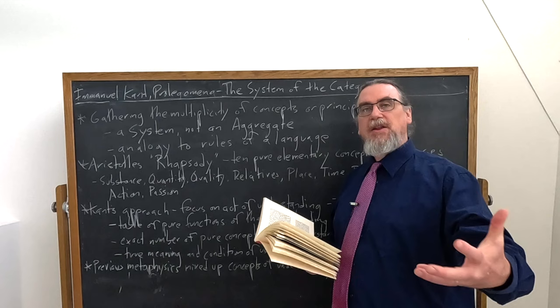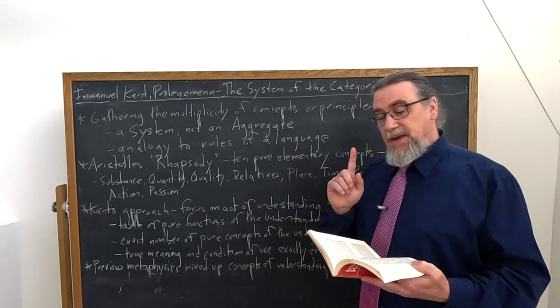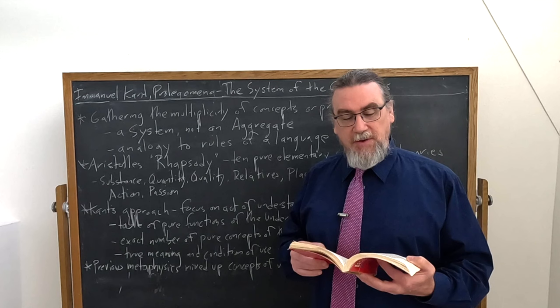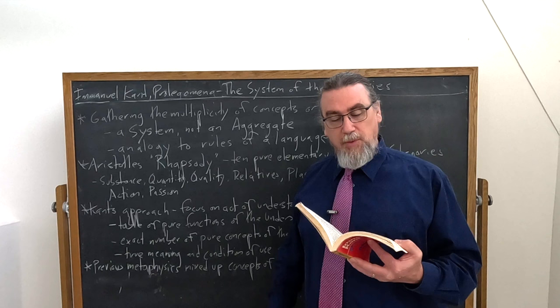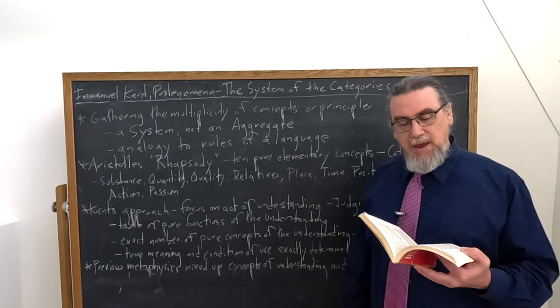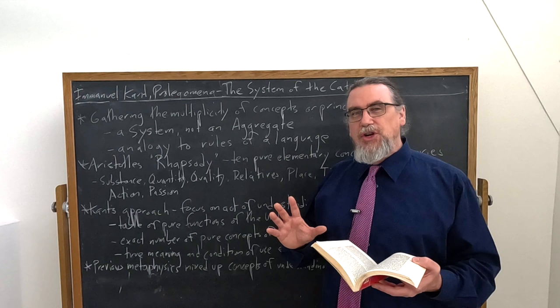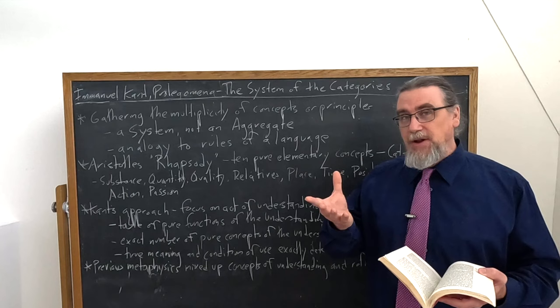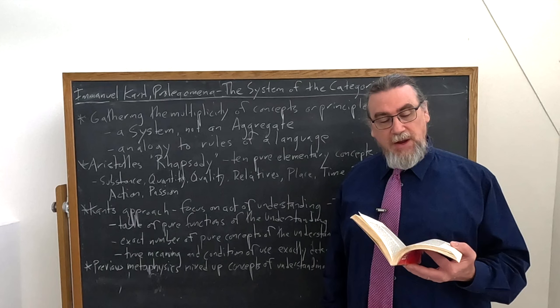He says: I was justified in calling them categories — the old name — because that's what they're actually doing. He reserved for himself the liberty of adding, under the title of predicables, all the concepts deducible from them by combinations, whether among themselves or with the pure form of the appearance — space or time — or with its matter, as soon as a system of transcendental philosophy should be completed, which he was engaged in in the Critique of Pure Reason. The essential point: by means of this system, the true meaning of the pure concepts of the understanding and the condition of their use could be exactly determined. They are themselves nothing but logical functions and do not constitute the least concept of an object in itself — no noumenon, no Ding an sich — but require some sensuous intuition as a basis.